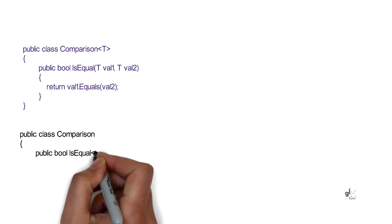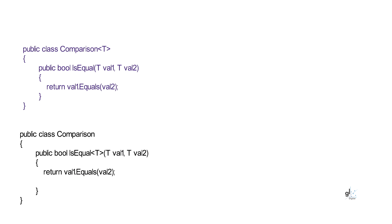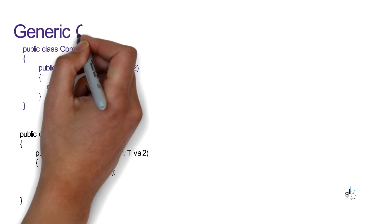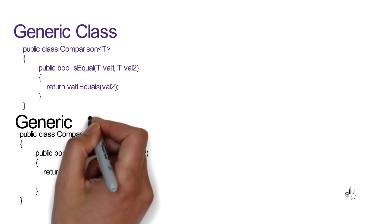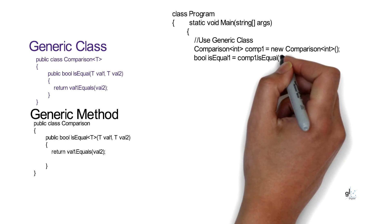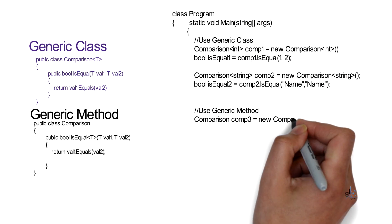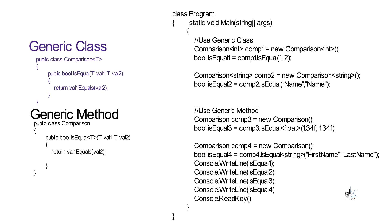What is meant by generics in relation to the C-Sharp programming language? Generics was introduced in C-Sharp version 2 and enables developers to use type parameters in code. This makes it possible to design classes and methods that defer the specification of one or more types until the class or method is declared and instantiated by client code. For example, by using a generic type parameter T, you can write a single class that other client code can use without incurring the cost or risk of runtime casts or boxing operations.